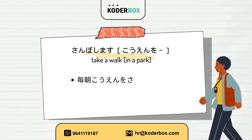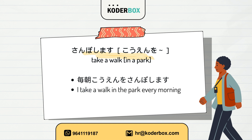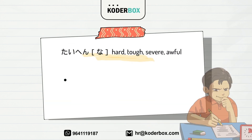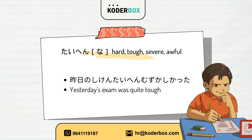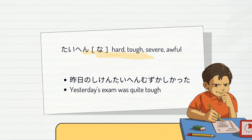Eighth, sanpo shimasu — take a walk. Mai asa kouen o sanpo shimasu. I take a walk in the park every morning. Ninth, taihen — hard, tough, severe, awful. Kinoo no shiken wa taihen deshita. Yesterday's exam was quite tough.